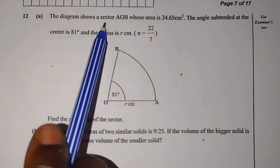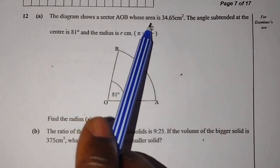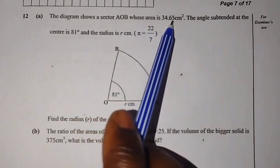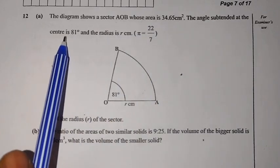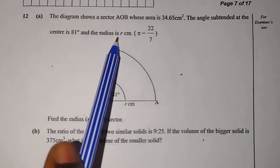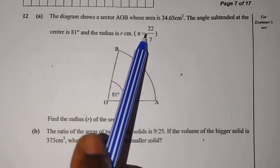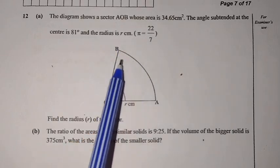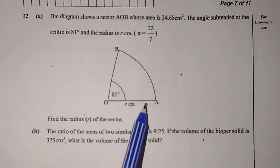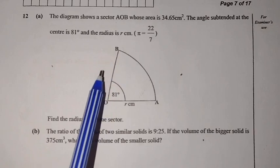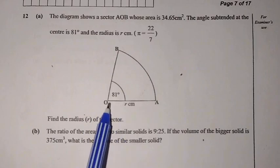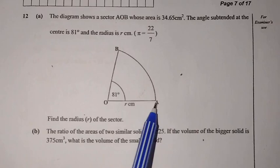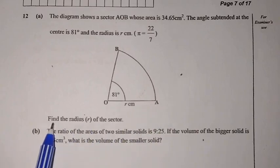The diagram shows a sector AOB whose area is 34.65 square centimeters. The angle subtended at the center is 81 degrees and the radius is R centimeters. Take π to be 22 over 7. So this is the sector AOB which is having an angle subtended at the center which is 81 degrees, and the radius OA is R centimeters.